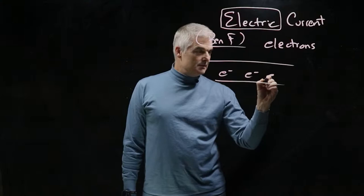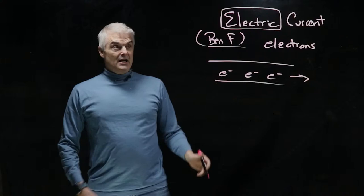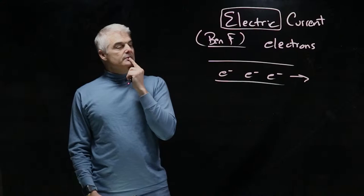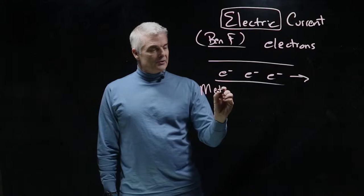But now we know - drumroll please - what electricity is. Electricity is electrons moving in a direction. That's it: electrons moving in a direction. Now, what do they move in?